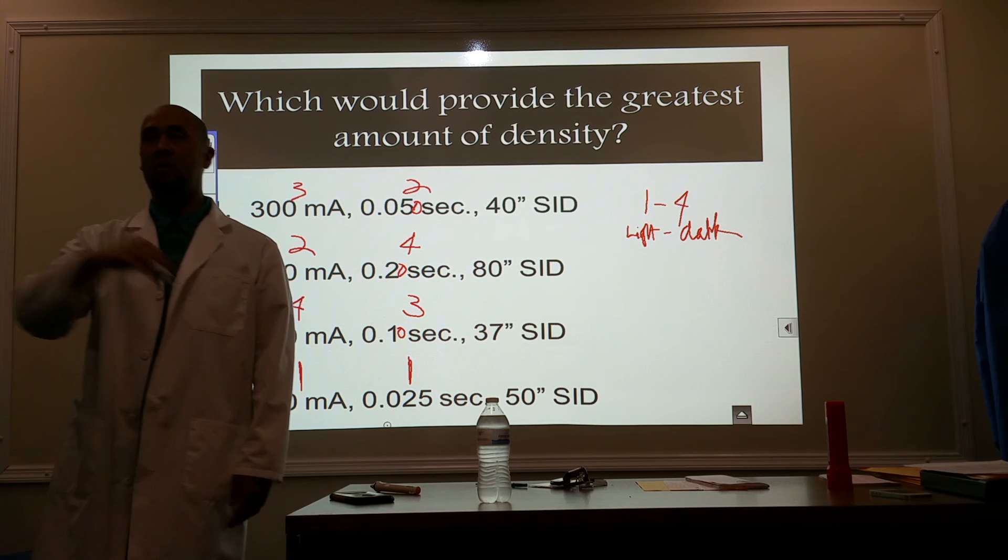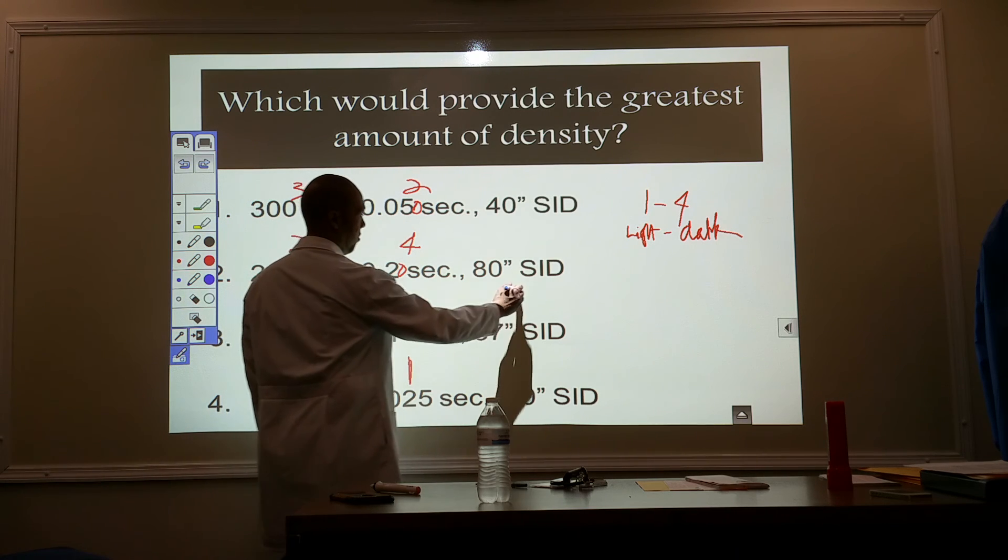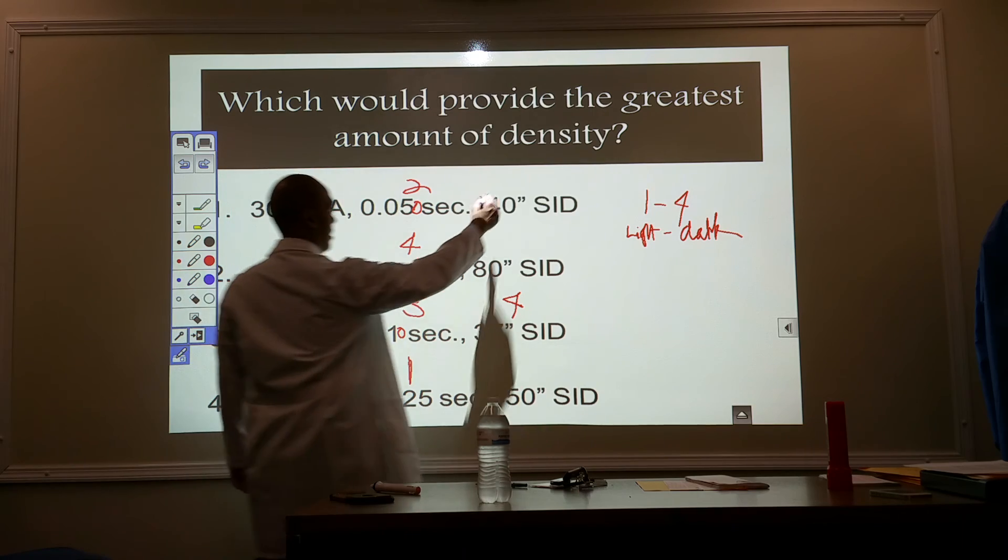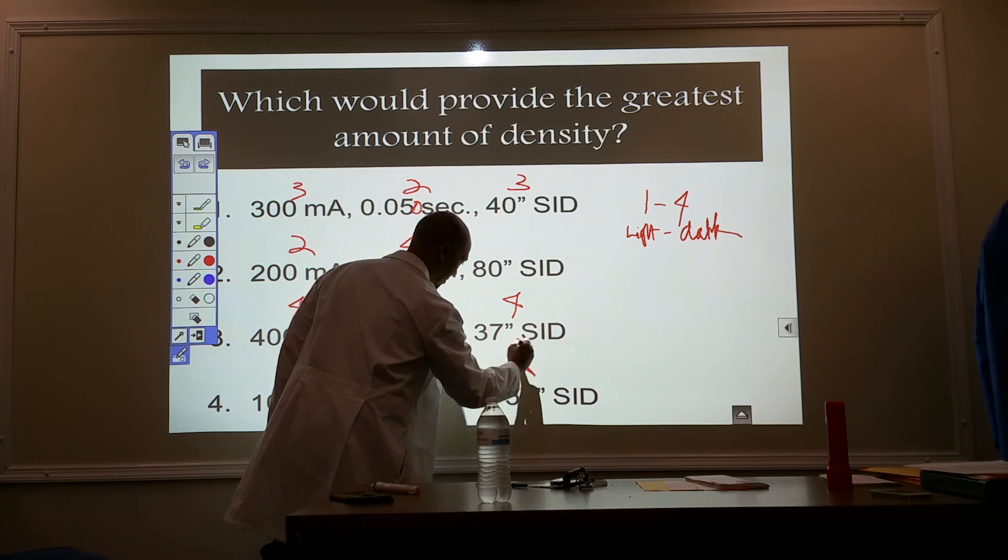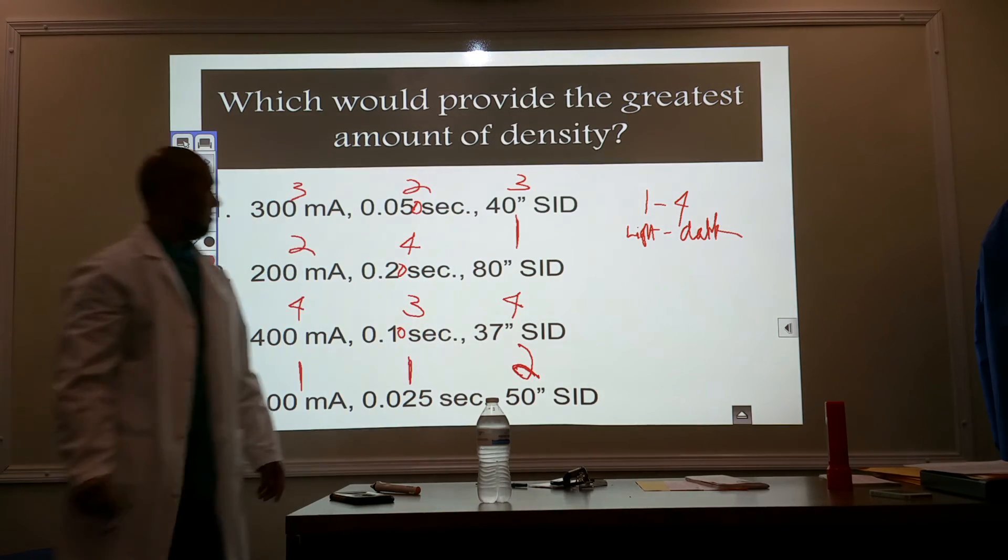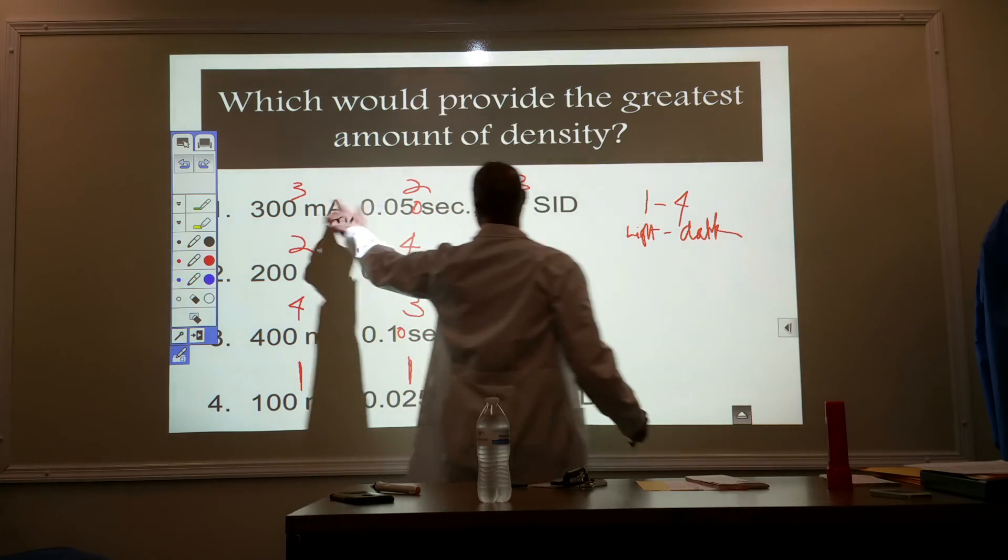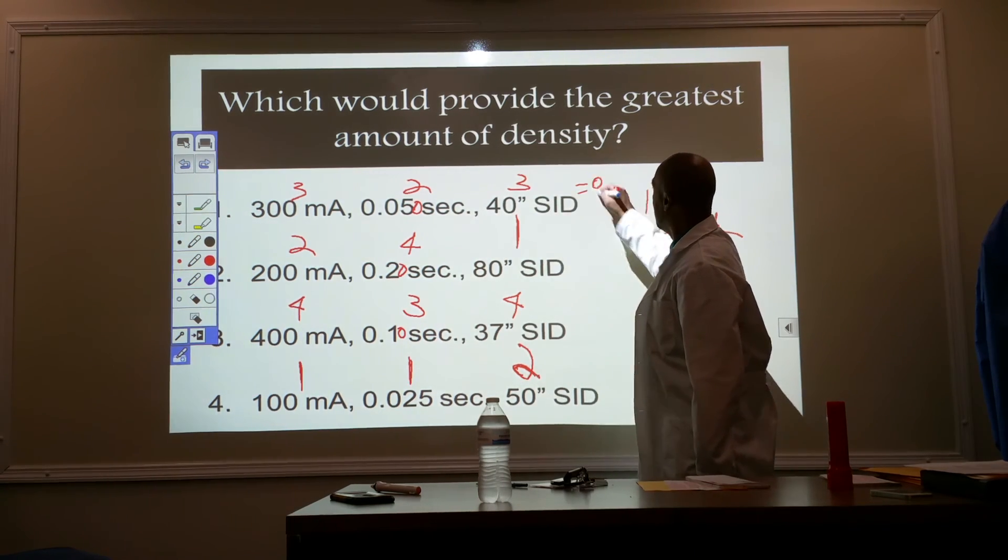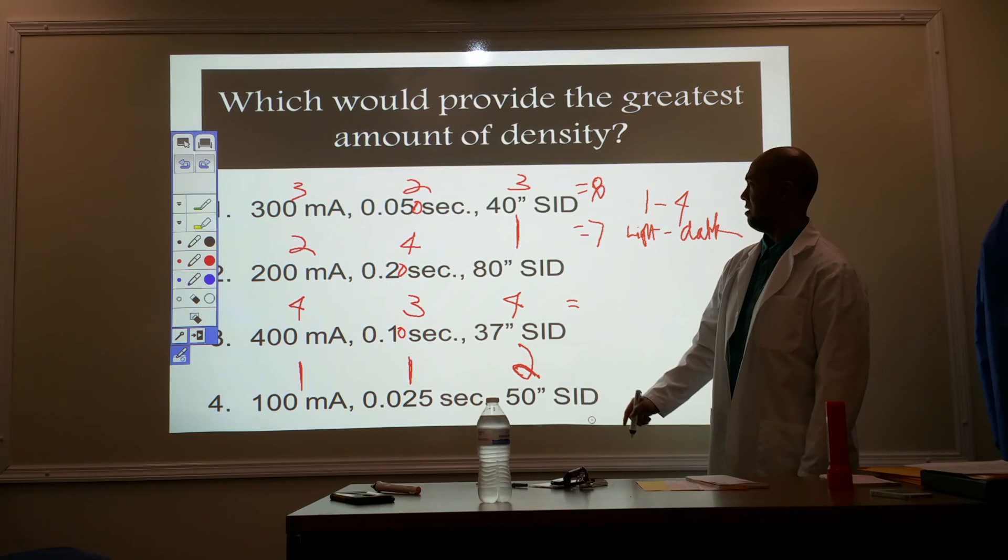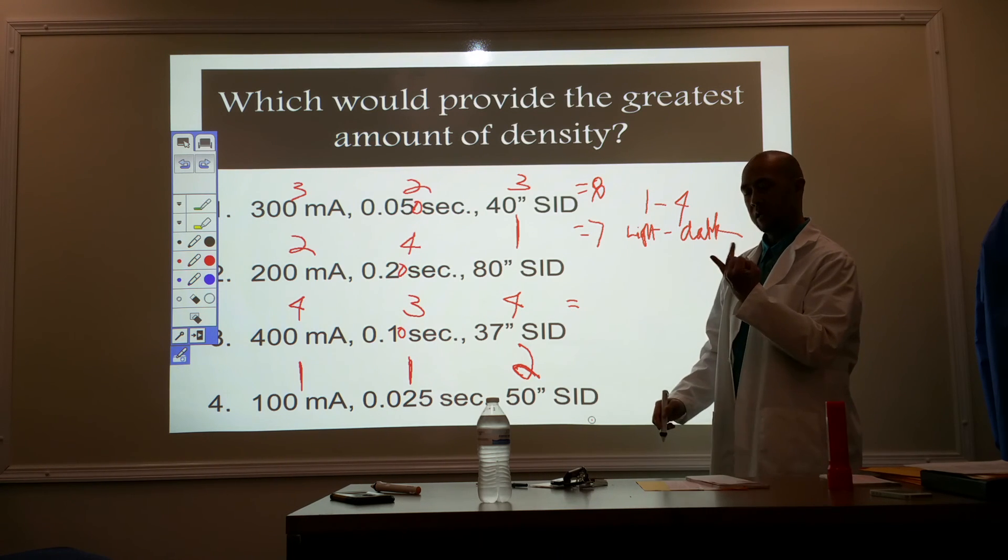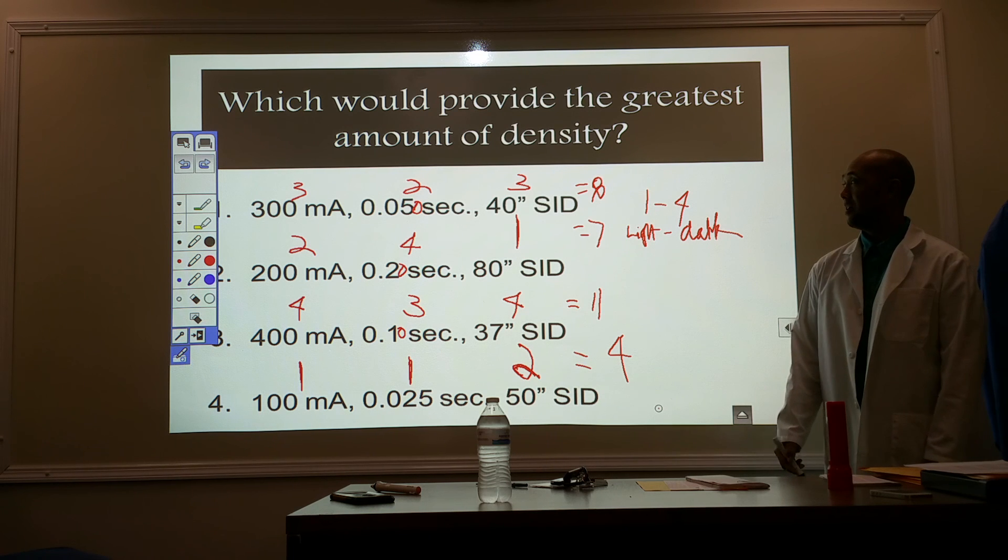And then SID. Do I want to be closer or further away to give me more density? Closer. Closer. All right. Number three. Four. I've got to stand back. Four. Three. Does that look right? All right. Let's just add across. Let's total it. Tally it. What is this? Eight. Six equals eight. Seven. Seven. Eleven. Eleven. Is it really eleven? Eight, nine, ten, eleven. Okay. Four. And four. Which is going to give us the most density? Number three. Do we agree? Number three.